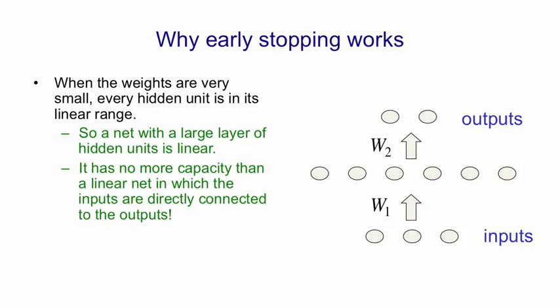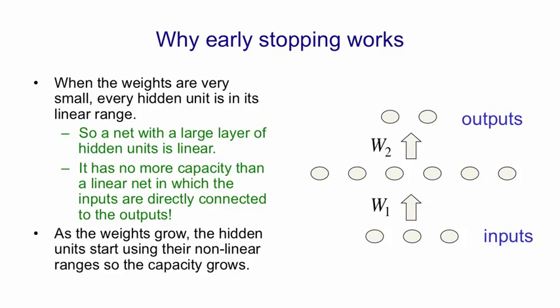So even though in that network I'm showing you there's three times six plus six times two weights, it's really got no more capacity than a network with three times two weights. But as the weights grow we start using the non-linear region of the sigmoids and then we start making use of all those parameters.